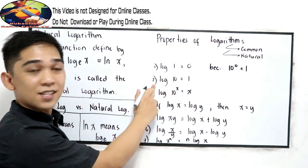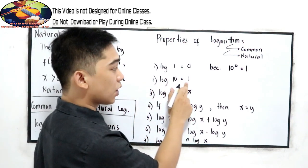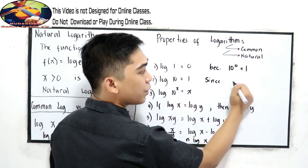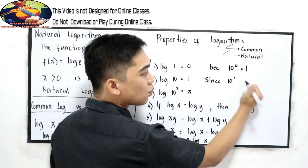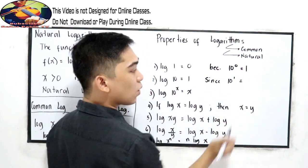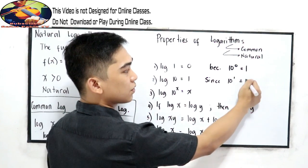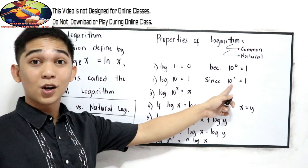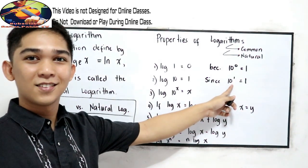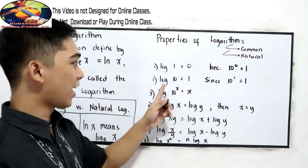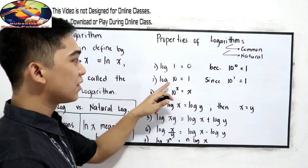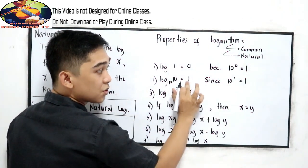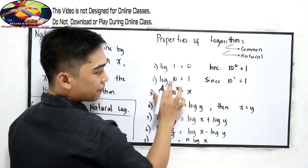Second property: log 10 is equal to 1, since 10 raised to 1 is equal to 10 in our common logarithm. That is why we have 10 raised to 1 equal to 10.